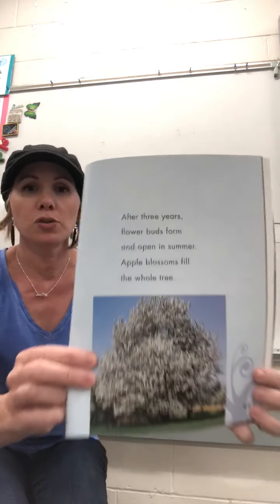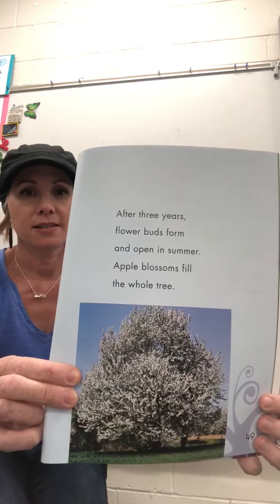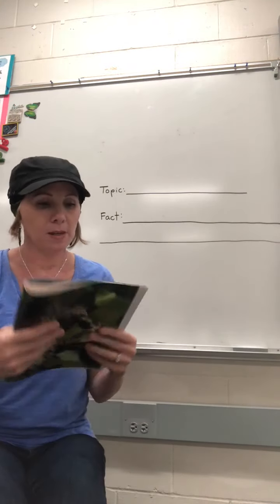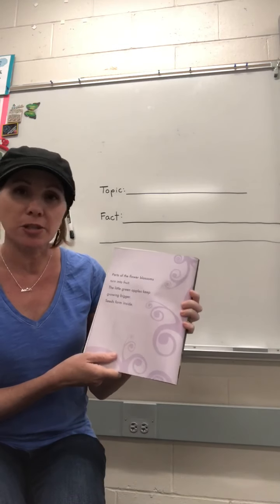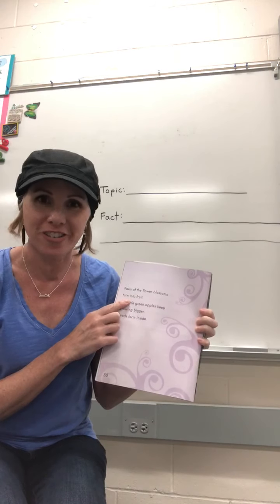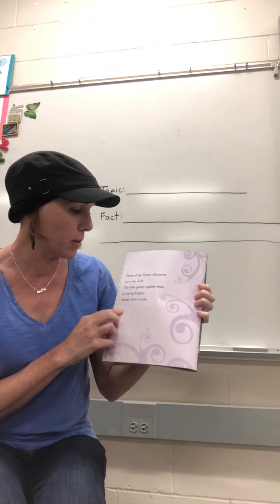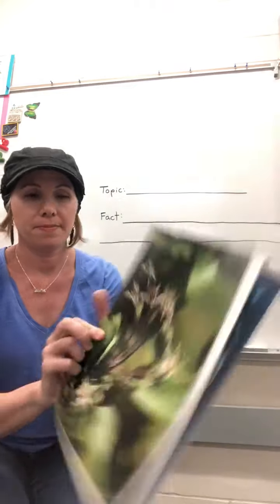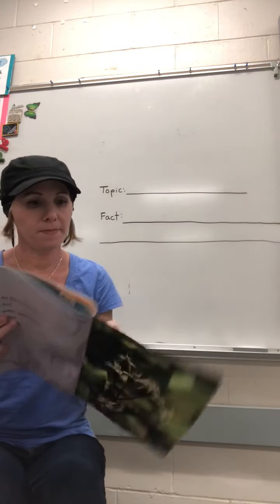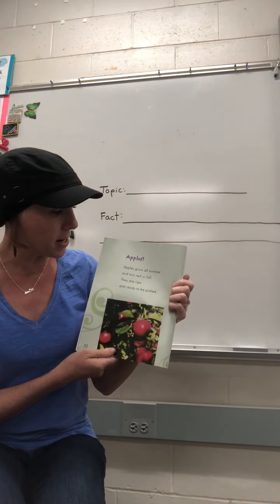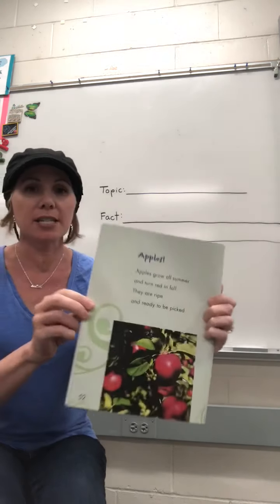Apple blossoms fill the whole tree. Parts of the flower blossoms turn into fruit — that's a fact. Parts of the flower blossoms turn into fruit. The little green apples keep growing bigger. Seeds form inside. Apples grow all summer and turn red in fall. They are ripe and ready to be picked.